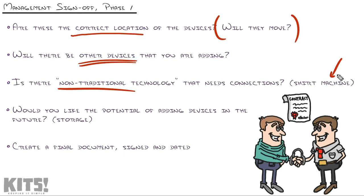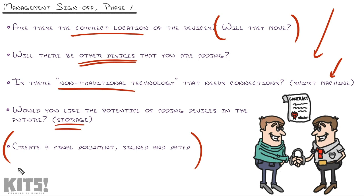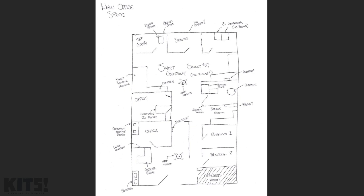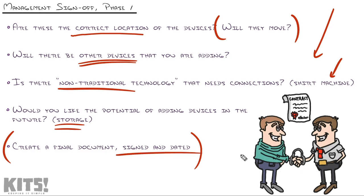There's a lot of non-traditional stuff that needs network connections. Would you like the potential of adding devices in the future? Get a sign-off on that storage room and the empty office where nobody is sitting yet — are you going to be adding two or three different people? The whole goal of all of this is that you are doing a cabling installation one time. You don't want to have to come back again and again. Create a final document — and if you're working as a consultant, make sure that floor plan looking a lot more professional is signed and dated. Even if you're working for a company as an employee, you want documentation that everybody fully agreed on, so you can always come back to it if there's any disagreement.